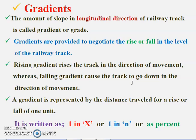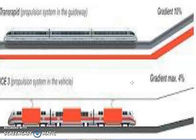Gradient is a very important parameter. Gradient is the rise or fall in the level of the railway track. The main aims of providing gradients are to reach the various stations at different elevations, to minimize the cost of earthwork, and to follow the ground contours as much as possible.